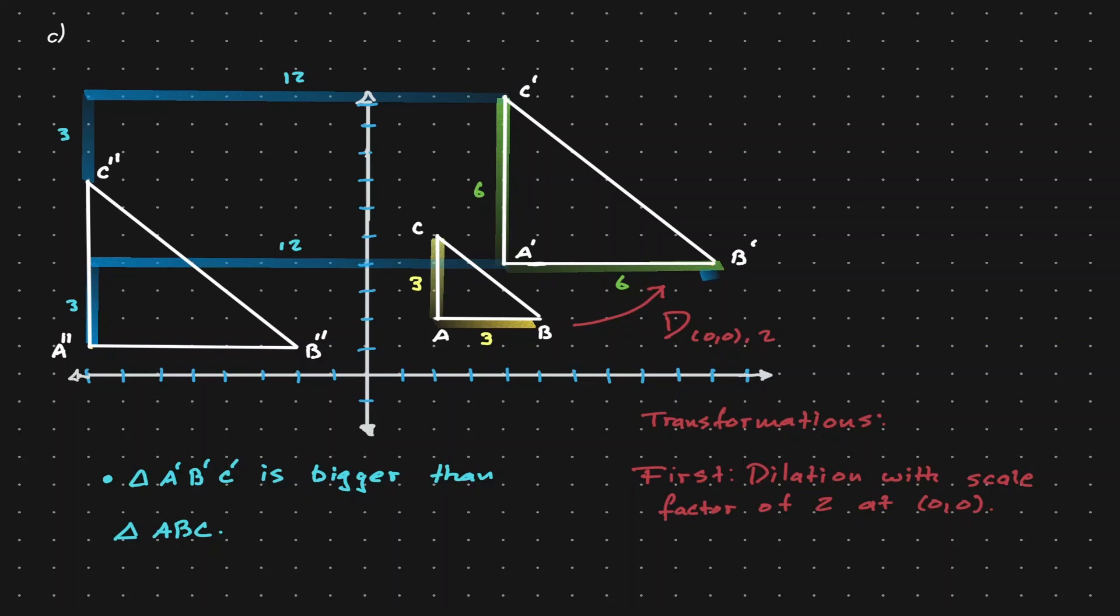And that's the same with B prime. If we move 12 units to the left and we move 3 units down, notice that we end up at B double prime. So this is enough information for us to conclude that the second transformation was a translation of a movement of 12 units to the left and 3 units down.